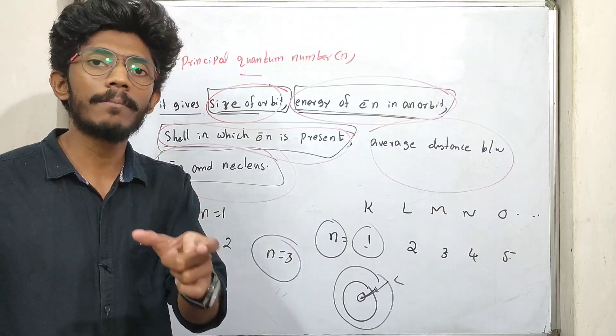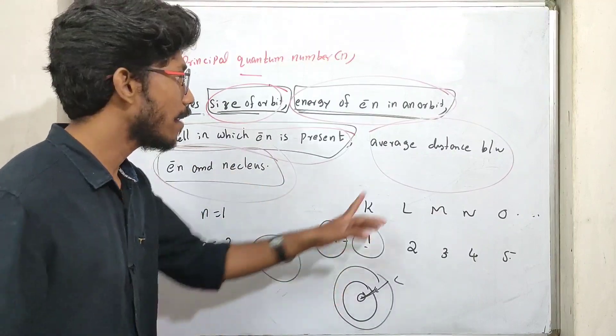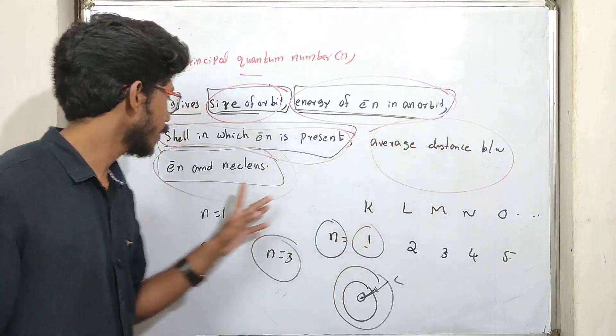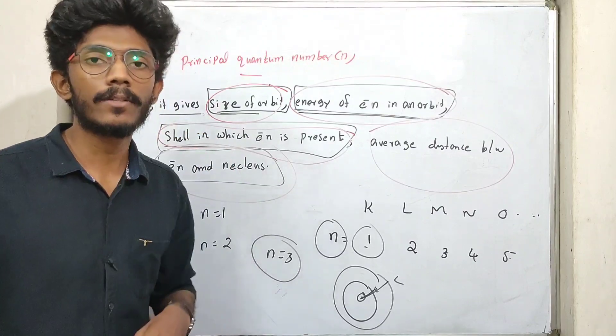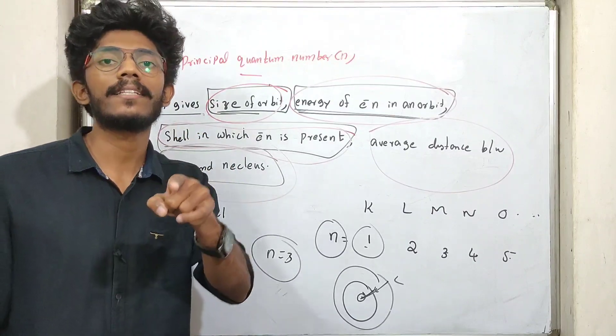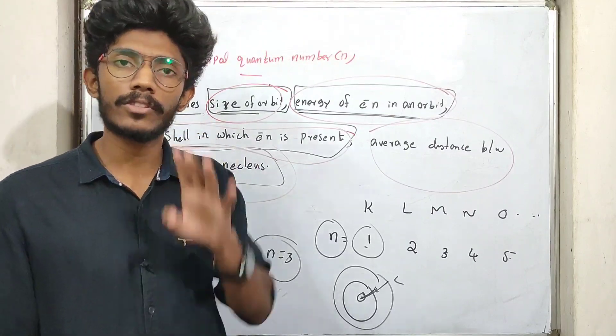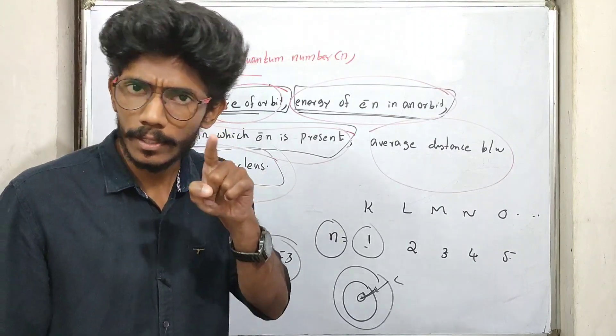The principal quantum number gives the idea of the number of the electron, including the average distance between electron and the nucleus. This is a pretty clear concept for the exam.